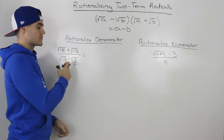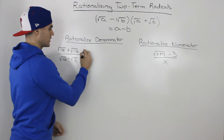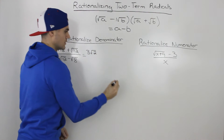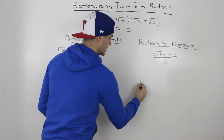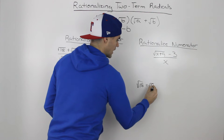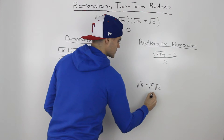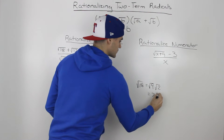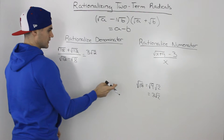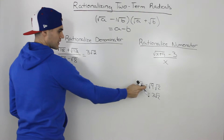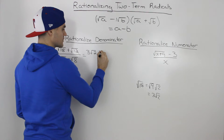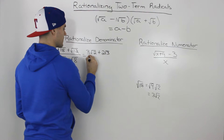So, for example, this root 18 we can rewrite as 3 root 2, because root 18 is equal to root 9 times root 2, which would just give us 3 root 2. And then this root 12, similarly, we can split it up into root 4 times root 3, which would just give us 2 root 3.